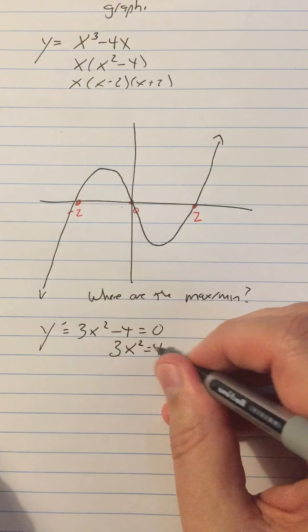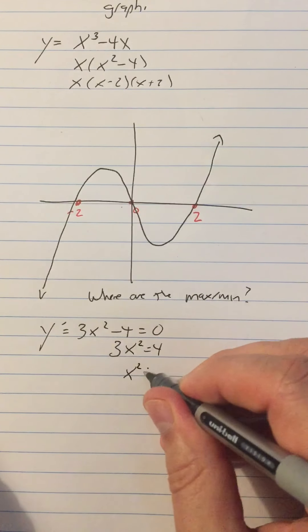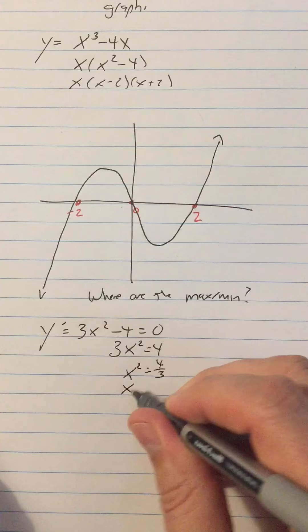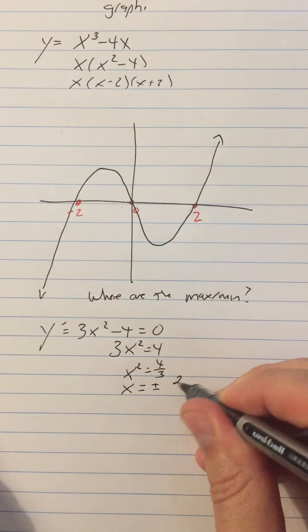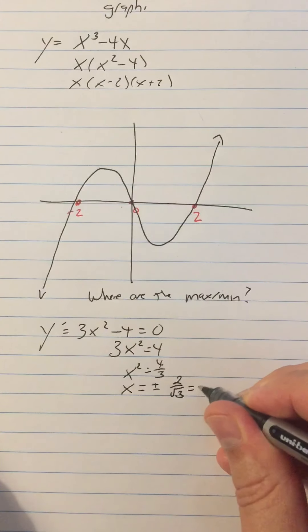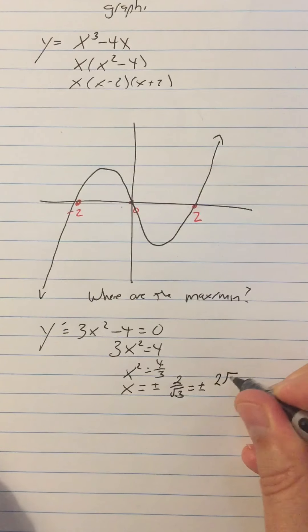So 3x squared equals 4, x squared equals 4 thirds, x equals plus or minus 2 over the square root 3, also known as plus or minus 2 square root 3 over 3.